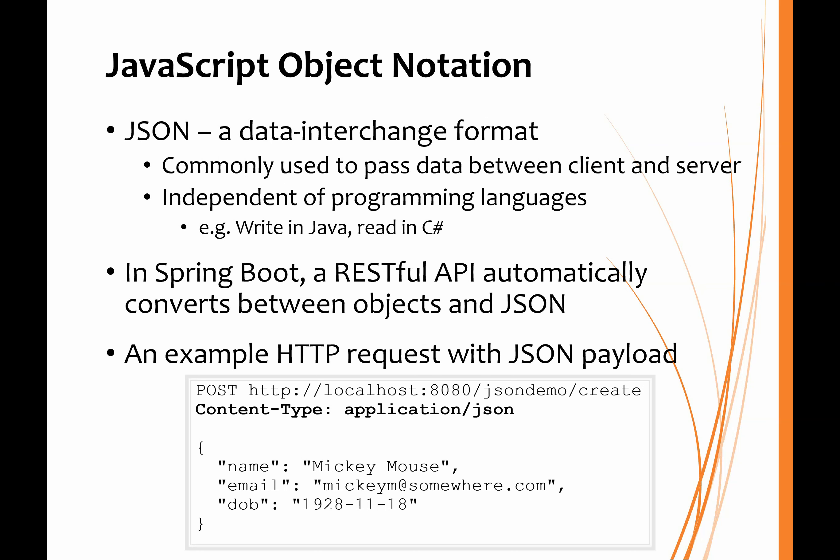When using REST, we'll often want to make use of JavaScript Object Notation (JSON), which is a data exchange format and is very commonly used to pass data between client and server. One of the nice things about JSON is that it is independent of programming language. So we can write a Java program using Java objects, and when we want to transfer data from those Java objects to another application — maybe written in C# — we can construct a JSON string from the Java objects.